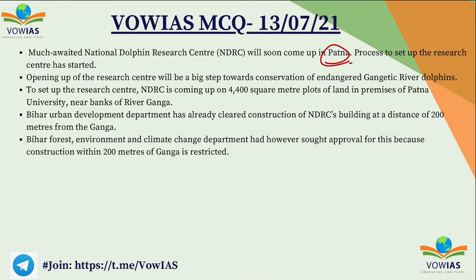For the NDRC, a 4,400 square meter plot on the premises of Patna University near the banks of River Ganga has been selected. The Bihar Urban Development Department has already cleared construction of the NDRC's building at a distance of 200 meters from the Ganga River. The Bihar Forest and Environment Department has sought approval for construction within 200 meters of the Ganga, as there are restrictions under wetland rules for constructions within 200 meters from the river.